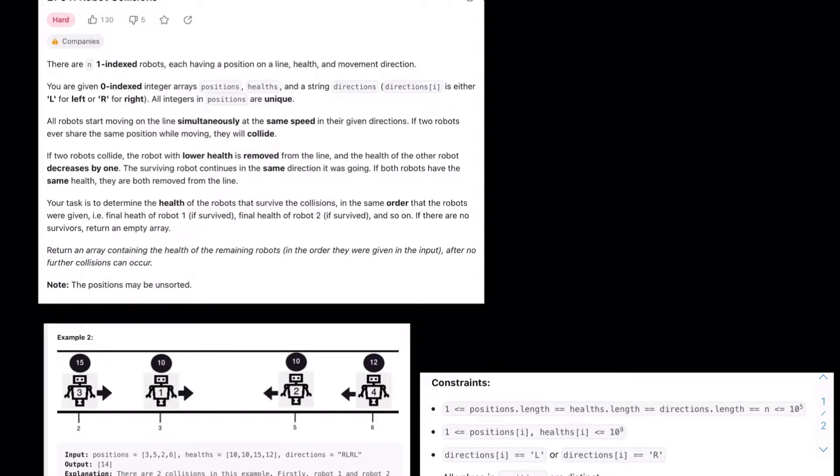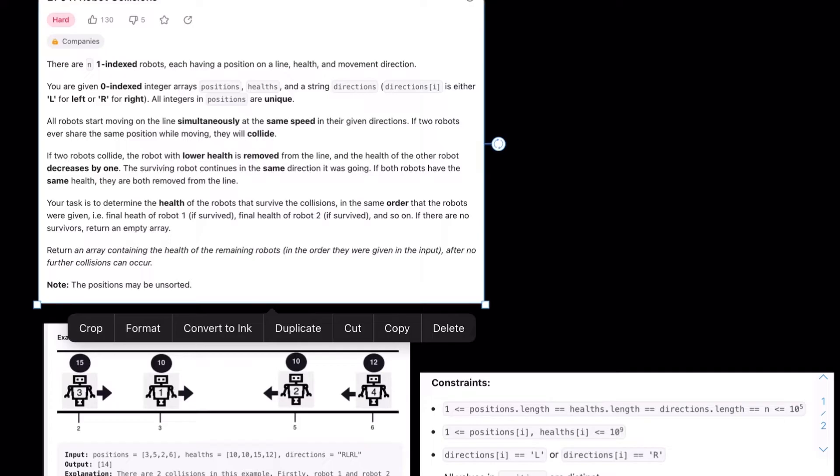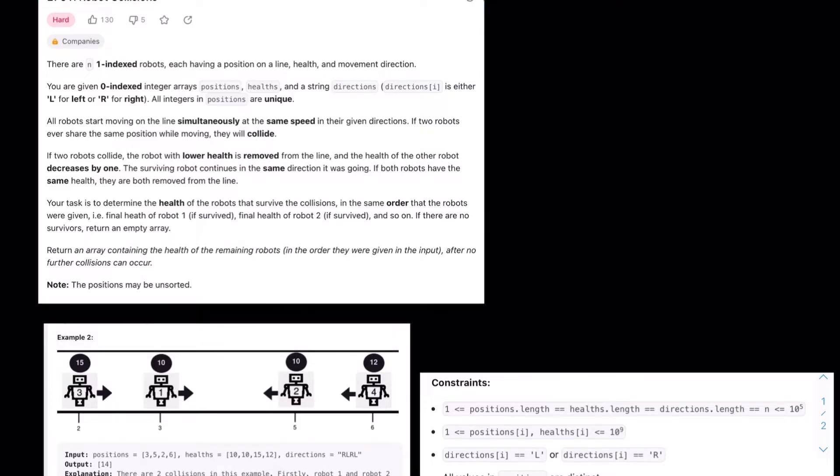If two robots collide, the robot with lower health is removed from the line, and the health of the other robot decreases by one. The surviving robot continues in the same direction it was going. If both robots have the same health, they are both removed from the line.